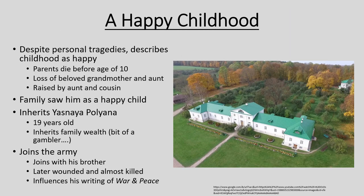Beginning with Tolstoy's childhood, we see that despite a number of personal tragedies, Tolstoy himself is remembered as having described his childhood as a happy one. Before the age of 10, Tolstoy ends up losing both of his parents and is then raised by his grandmother and aunt, who also subsequently pass away. By any account this would be a very depressing childhood, but he recalls it as very pleasant — in large part because he is raised by an aunt and cousin whom he loves deeply and remembers very fondly.